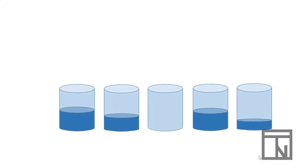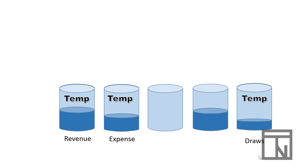When I think about closing entries, I imagine them being kind of like glasses of water. Each glass represents one of the accounts that we'll be using for the closing entry. For example, we have our three temporary accounts — Revenue, Expenses, and Draws.